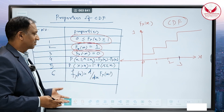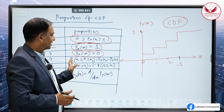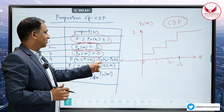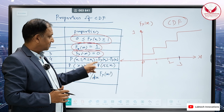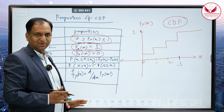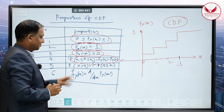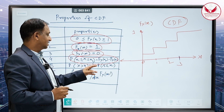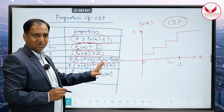Sometimes they will ask you to find the probability between two random variables, x1 and x2. Its property is F(x2), where x2 is always greater than x1, minus F(x1) — that is, CDF of x2 minus CDF of x1. Also, if they ask you to find the probability of a random variable greater than x, this is equal to 1 minus the CDF of x.